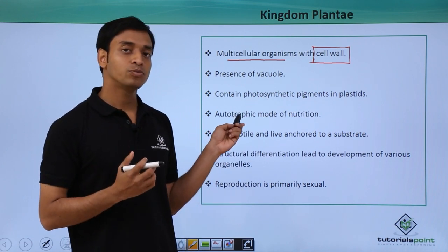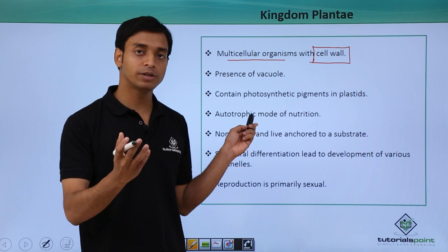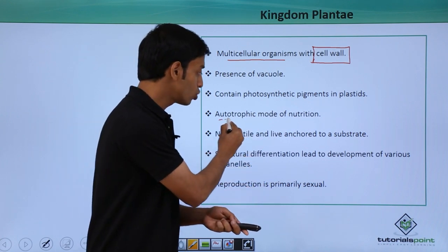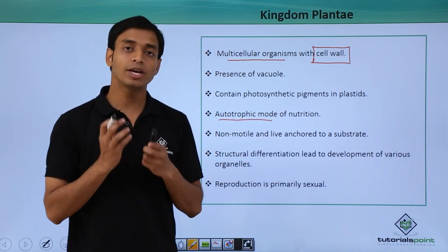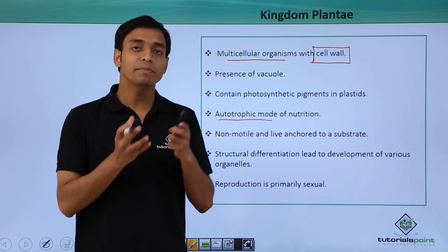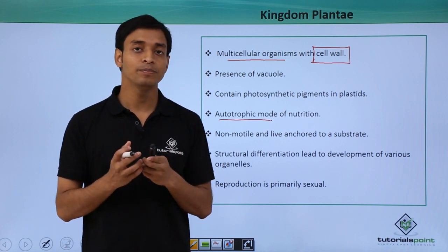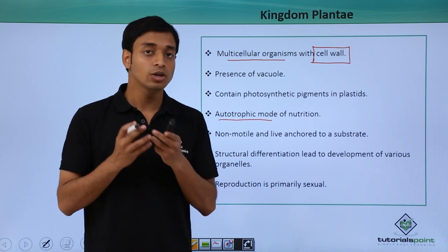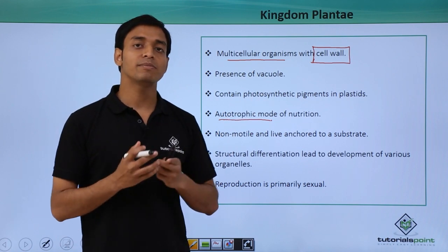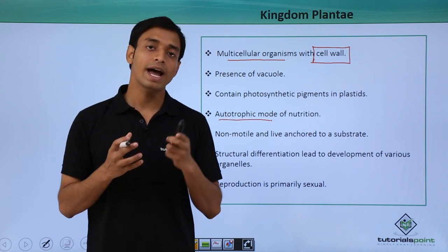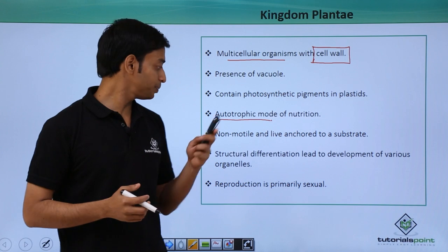So now you can understand what type of nutrition they will follow. They follow an autotrophic mode of nutrition because they can make their own food with the help of sunlight, carbon dioxide, water, and the presence of chlorophyll. Hence they are autotrophic in nutrition.